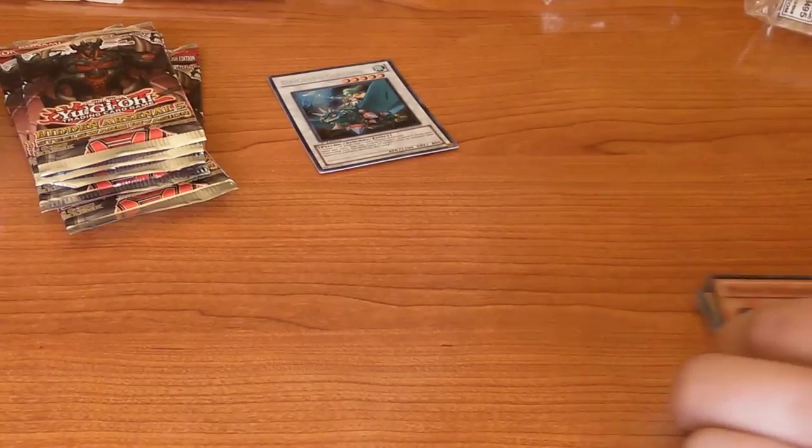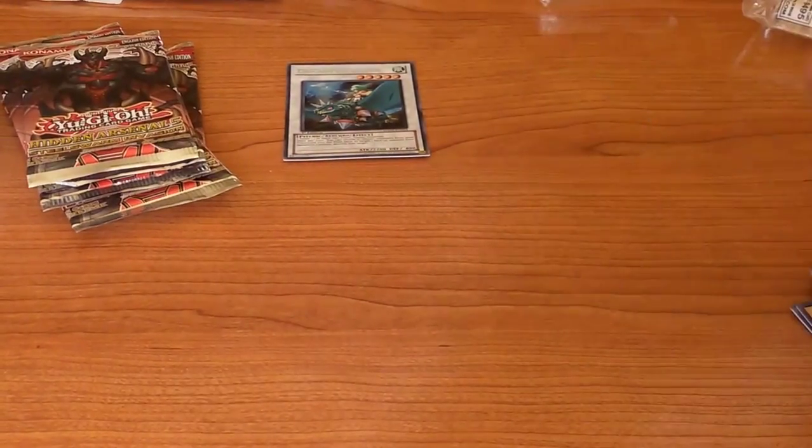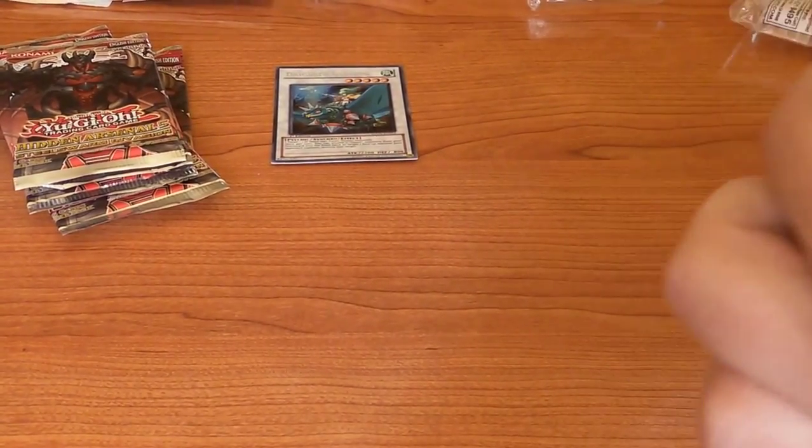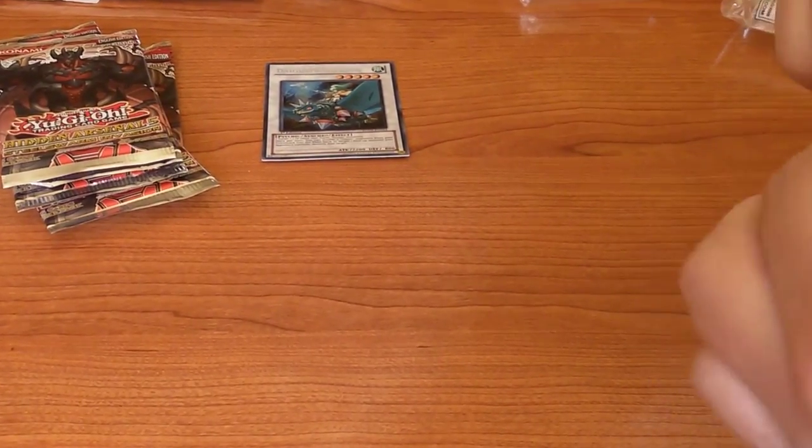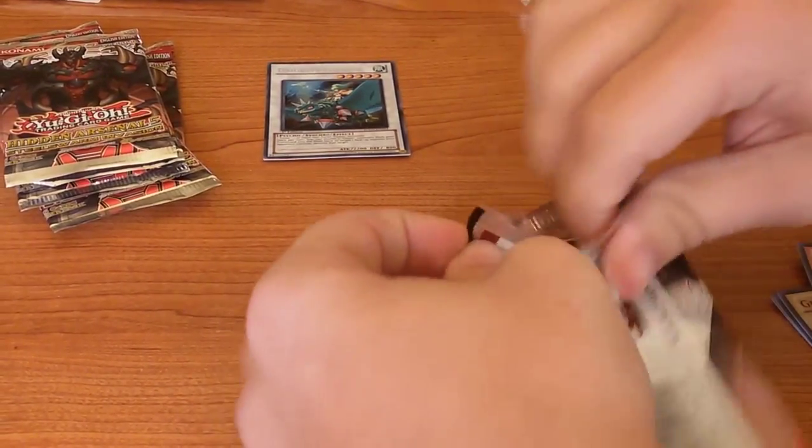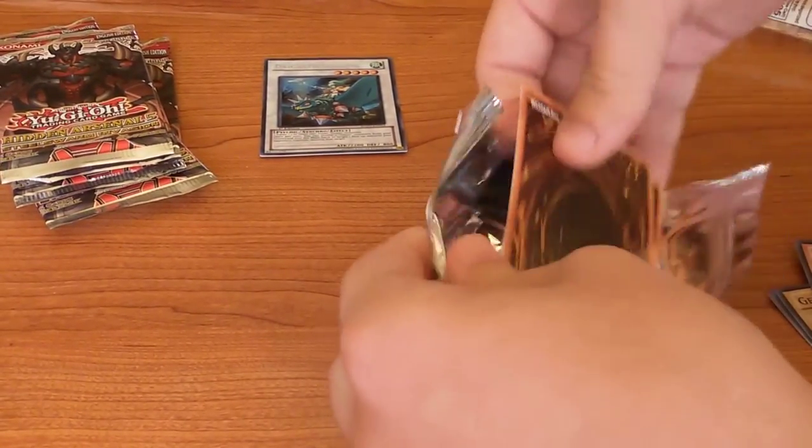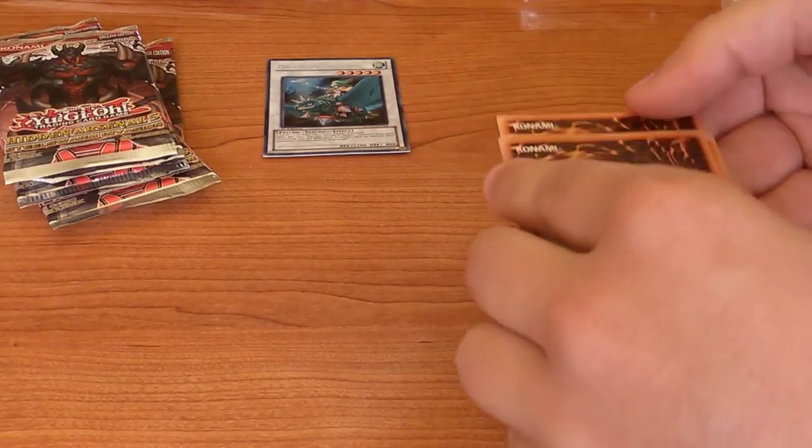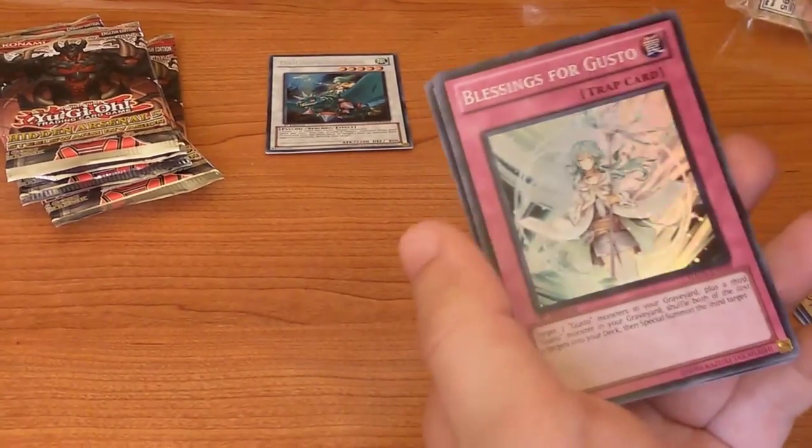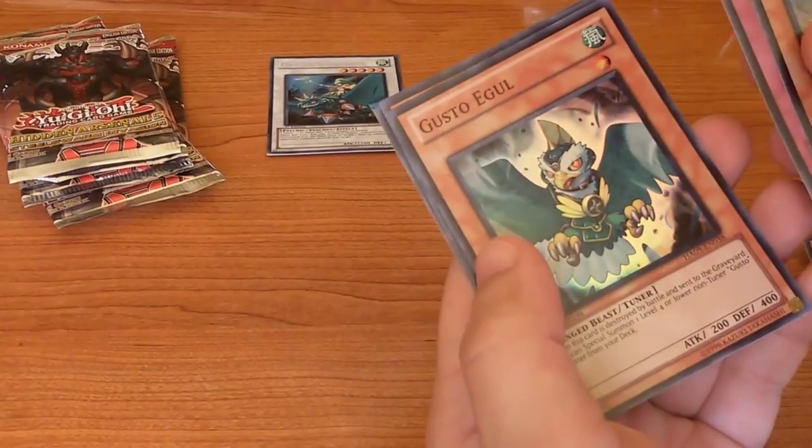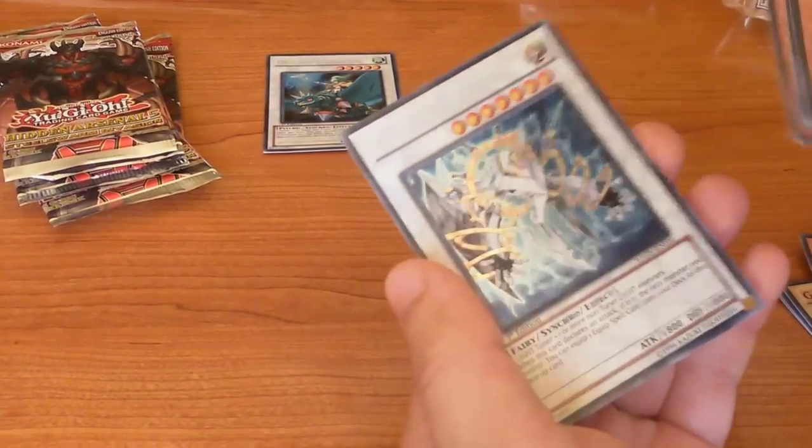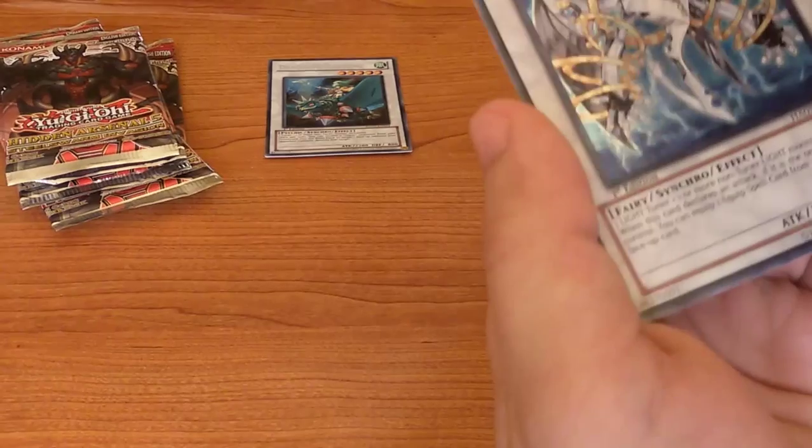I'm going to put this here. Okay, this is probably one of the messiest pack openings ever. I'm going to put this here. Okay, Vylon Vanguard, Blessing for Gusto, Gusto Eagle, Steelswarm Moth, and Vylon Sigma. Nice, another synchro. Okay.